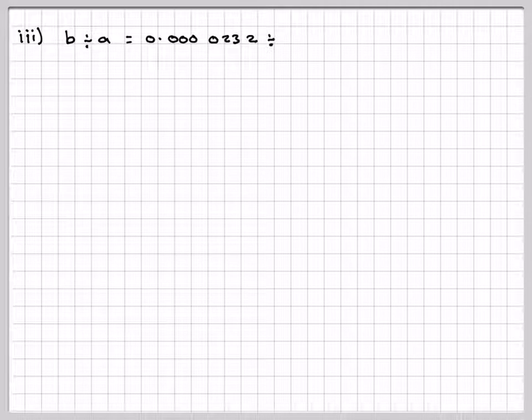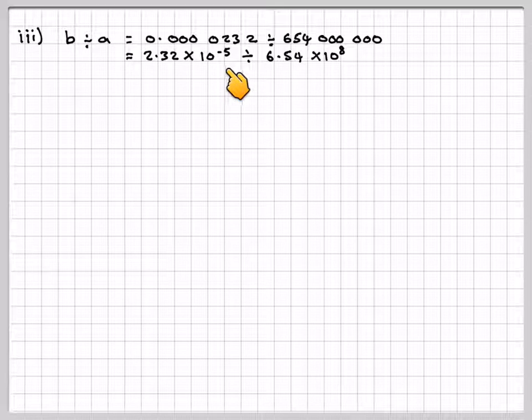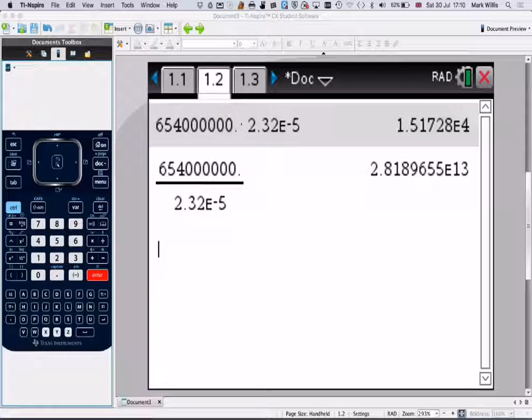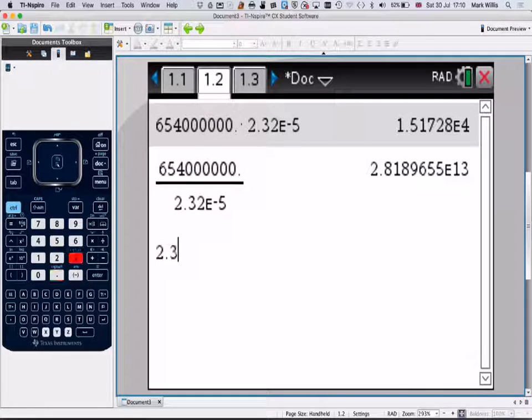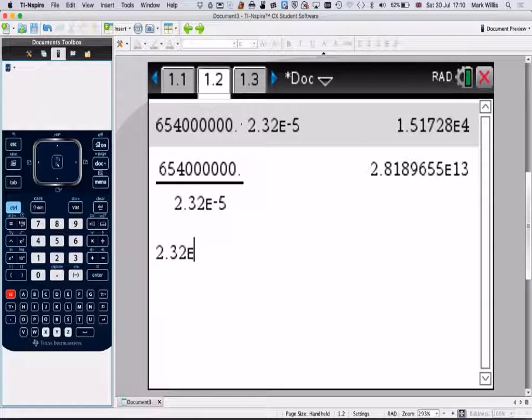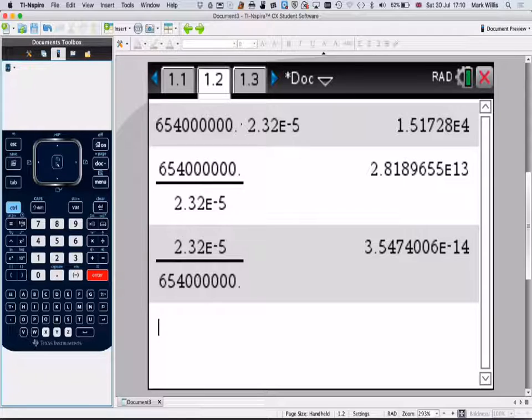Write B divided by A is 0.0000232 divided by 654 million. Then, write in each in standard form. So that's 2.32 times 10 to the minus 5 divided by 6.54 times 10 to the 8. Going to my GDC. So this time we're going to write in 2.32, E, don't forget, don't write times 10 to the minus 5 divided by 6.54, E to the 8. Press Enter. And then we get that number there, which is 3.54006 E times 10 to the minus 14.